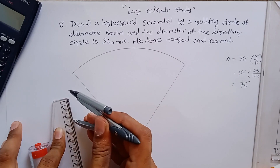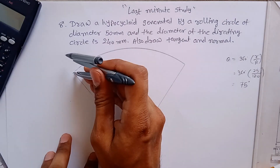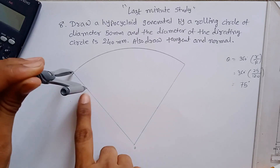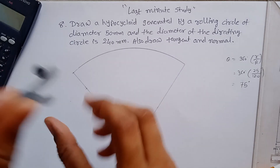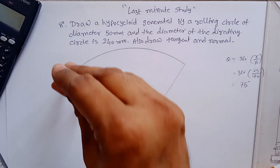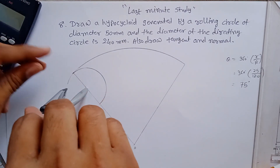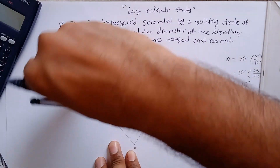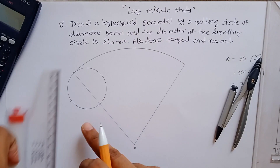Put the pointer on the endpoint and make an arc to find the center point of the rolling circle. This center point is 25 mm radius from the directing circle. Make the circle — this is your rolling circle with a radius of 25 mm, or 50 mm diameter. Now you have to divide this circle into 12 equal parts.